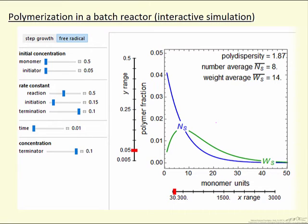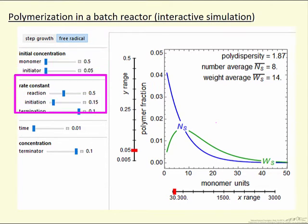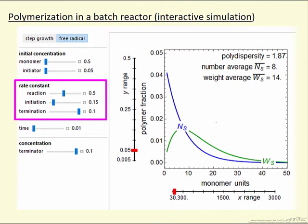I'm going to briefly describe how to use this interactive simulation that looks at polymerization in a batch reactor. We'll look at two types of polymerization. One is free radical polymerization, which has initiation, propagation, and termination. We have the options of changing the initial concentrations of both the monomer and the initiator, and we can also change the three rate constants: the initiation rate, the propagation rate, and the termination rate.